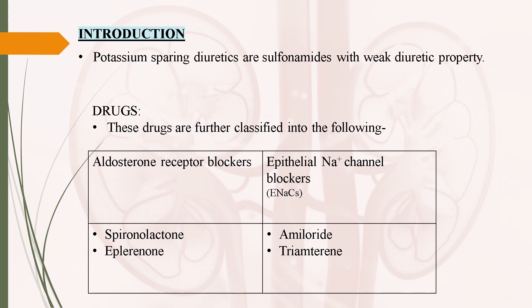Drugs included in aldosterone receptor blockers are spironolactone and eplerenone. Epithelial sodium channel blockers include drugs like amiloride and triamterene. You can remember these drugs with the mnemonic SEAT, where S stands for spironolactone, E stands for eplerenone, A stands for amiloride, and T stands for triamterene.